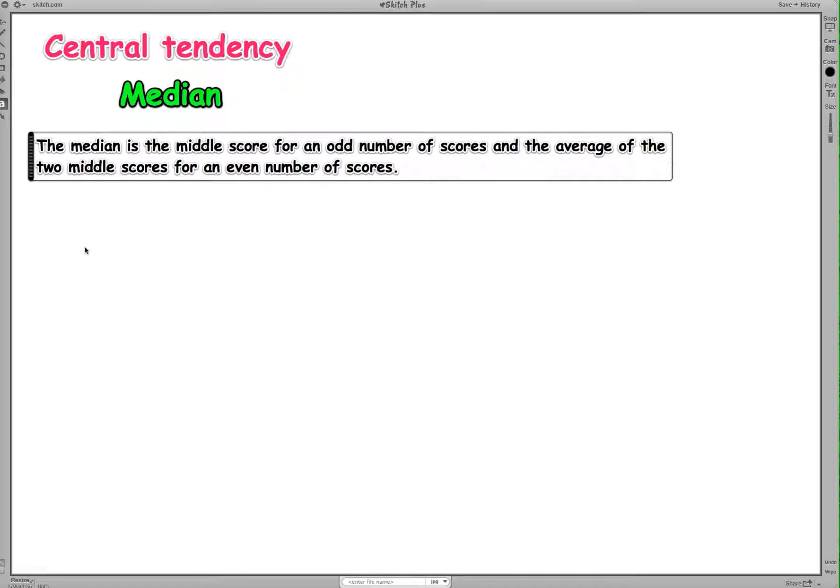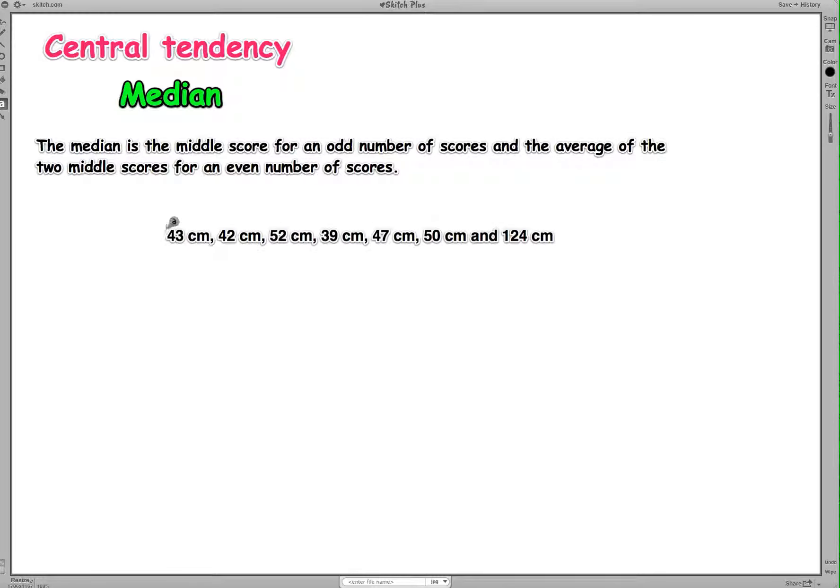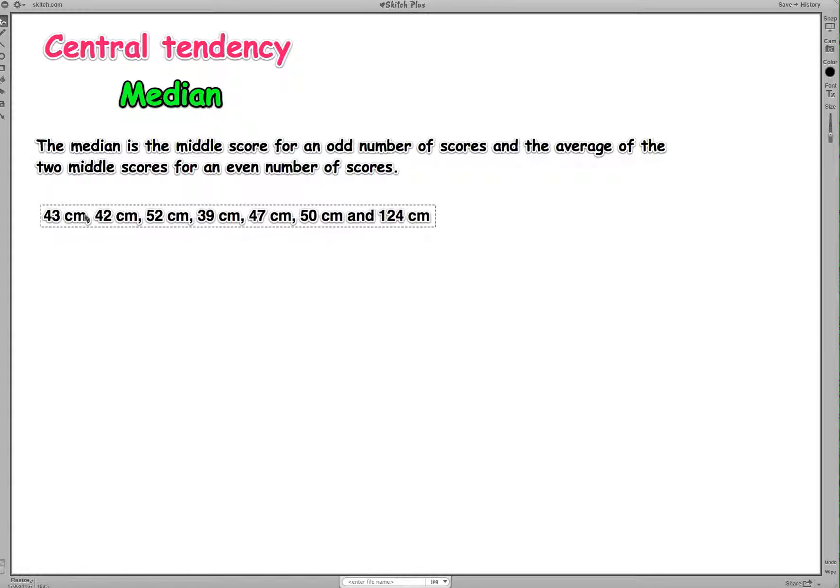Now there's a few things you need to do in order to calculate the median, but the example that I'm going to use is fishing. So we've gone on a fishing trip. Let's say on a fishing trip we caught seven fish. The lengths of those fish in this particular fishing trip were 43 centimeters, 42, 52, 39, 47, 50, and then we caught one whopping fish at 124 centimeters.